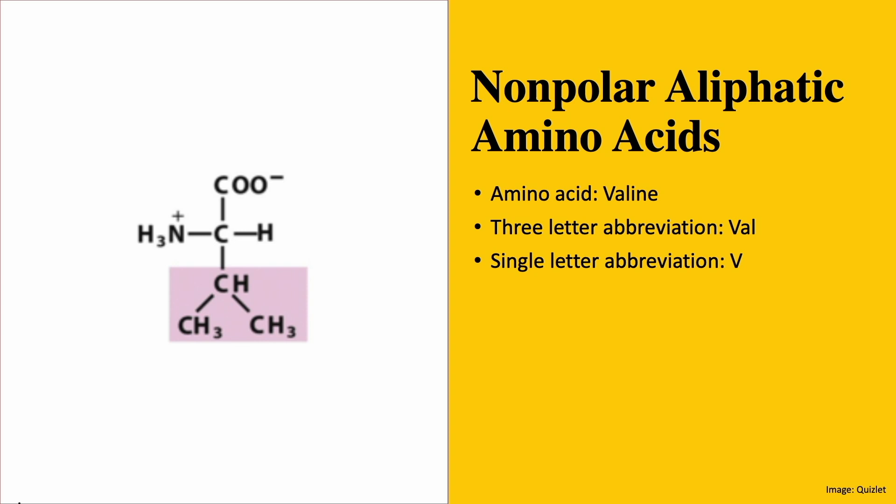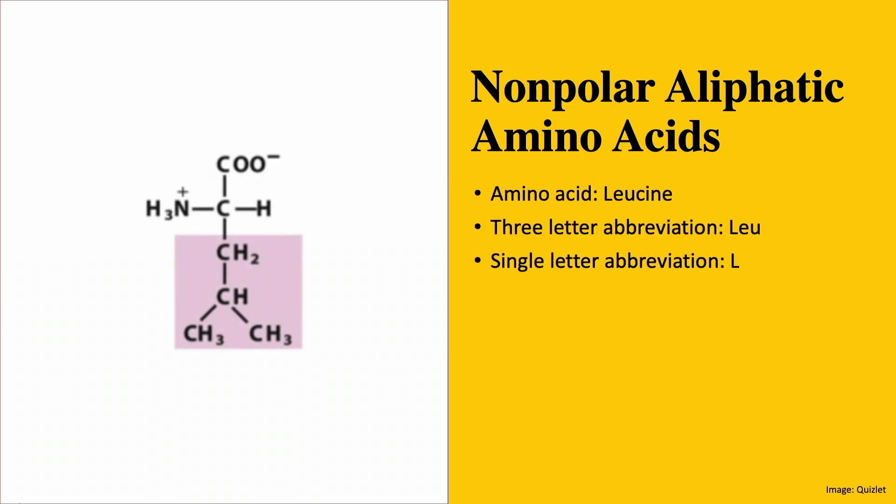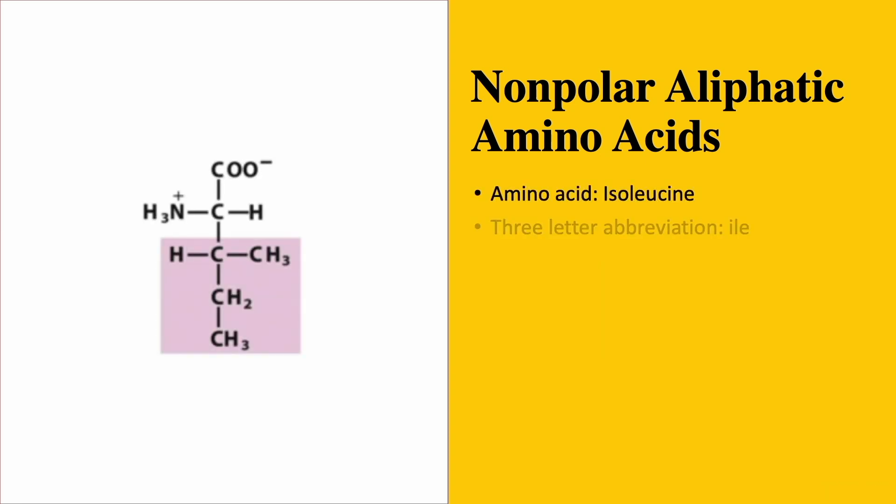Then we have leucine. This is the L of GAVLIMP. The main reason why I like this acronym is because it helps me remember the structure of the molecules it refers to. Like I mentioned before, each amino acid as laid out in this acronym builds on each other, and there's a minute change in each that creates the new amino acid. For example, in leucine, its R group is the same R group as valine but extended by one carbon atom added near the alpha carbon.